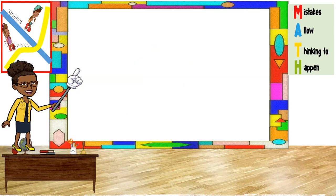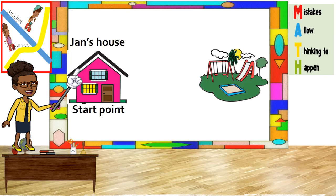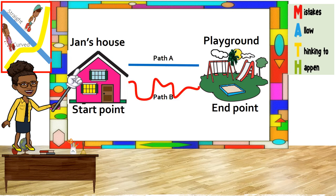Now let us look at the paths from Jan's house to the playground. Jan's house is the start point and the playground is the end point. How many paths do you see? There are two paths, A and B. Path A is straight and path B is curved. Did you say path B is longer? Correct — when the start and end points are the same, the curved path is always longer.